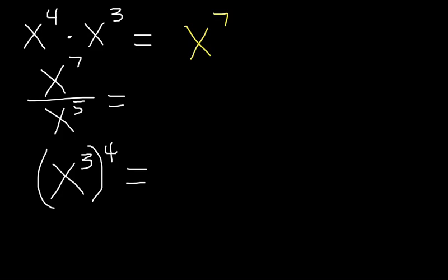Same thing works for division. Anytime you have the same bases with different exponents, you subtract to divide. So in our case, x to the 7th minus x to the 5th would be x squared.